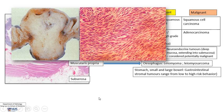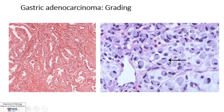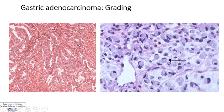Now let's look at how we prognosticate tumors, as also mentioned in the neoplasia chapter — taking a gastric adenocarcinoma as an example. We do grading and staging. Grading is done under the microscope. In this tumor on the left, there are very clear gland formations — not normal glands, but extremely irregular ones. With cytologic features of malignancy, this is a well-differentiated tumor because it is forming glandular structures. On the other hand, a poorly differentiated tumor does not form any glands at all.